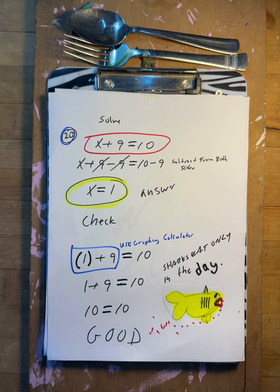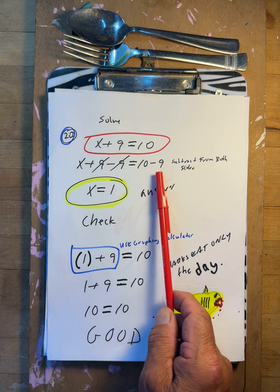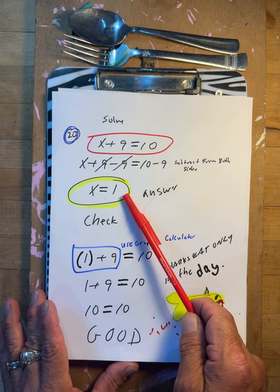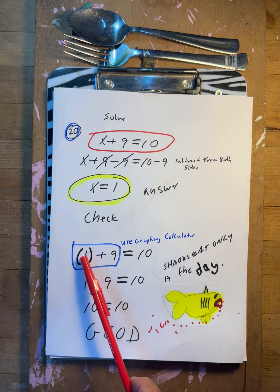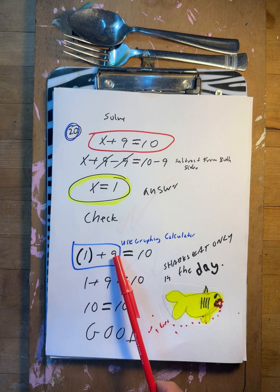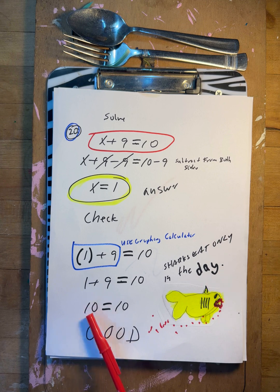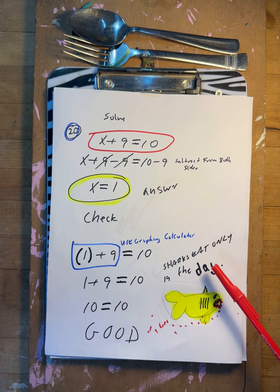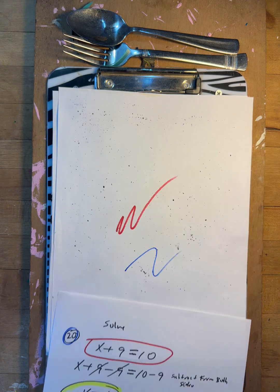Number 20: x plus nine equals ten. Minus nine, minus nine — those are gone. So x equals one. Put it in: one plus nine is ten. Yes, that equation works. Sharks eat only in the day, so at nighttime you are safe. That's question number 20 — that's all of it.